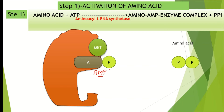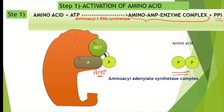This AMP binds with the amino acid, resulting in the formation of an amino acid–AMP–enzyme complex. The two inorganic phosphates that were removed are called pyrophosphate. This complex is called the aminoacyl adenylate synthetase complex.